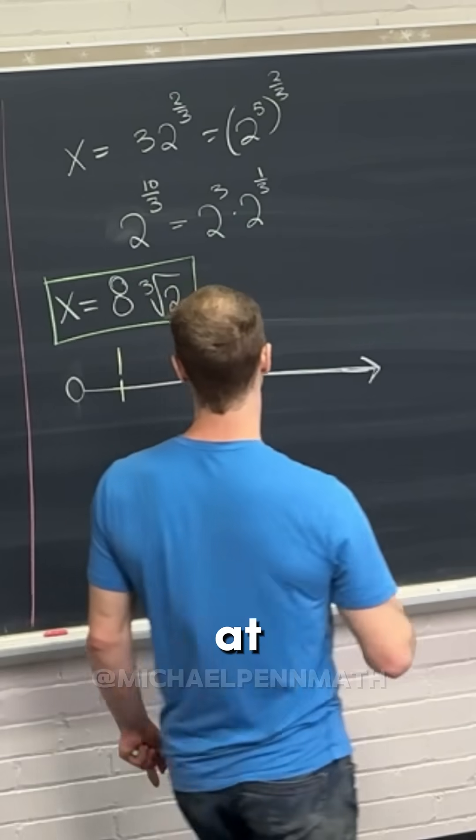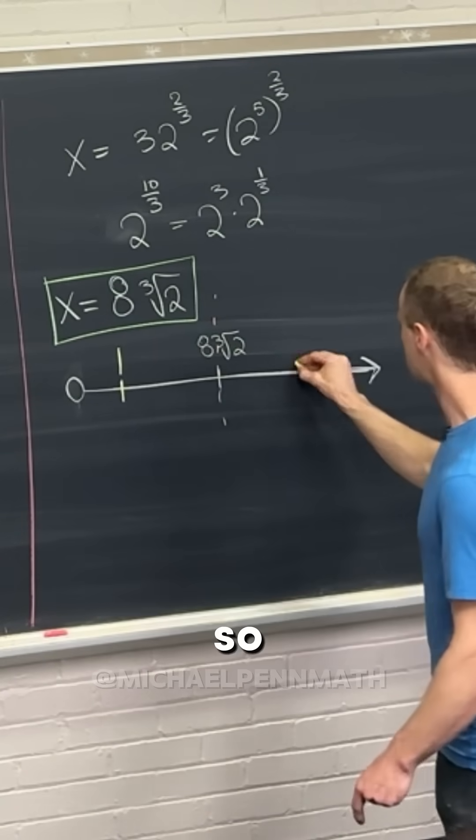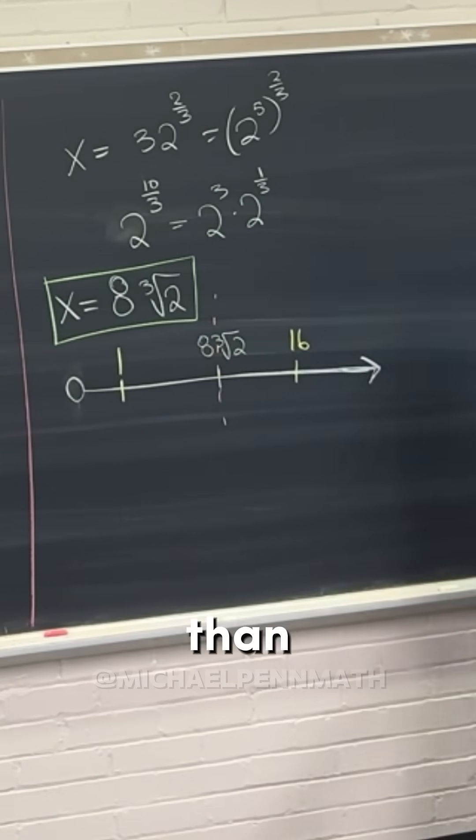Well, we can look at it like this. The cube root of 2 is definitely less than 2, right? 8 times 2 is 16, so this whole thing is definitely less than 16.